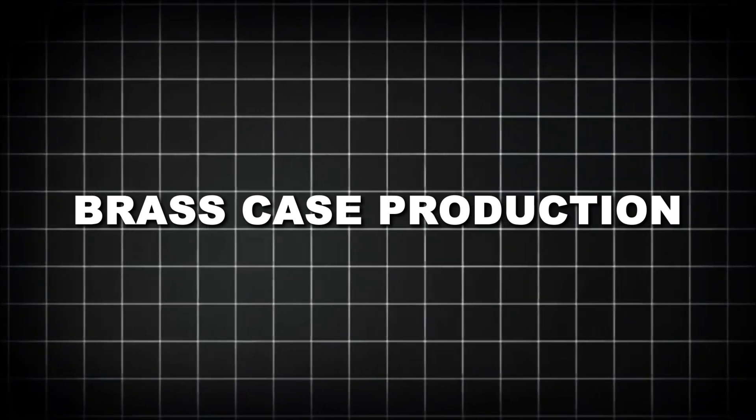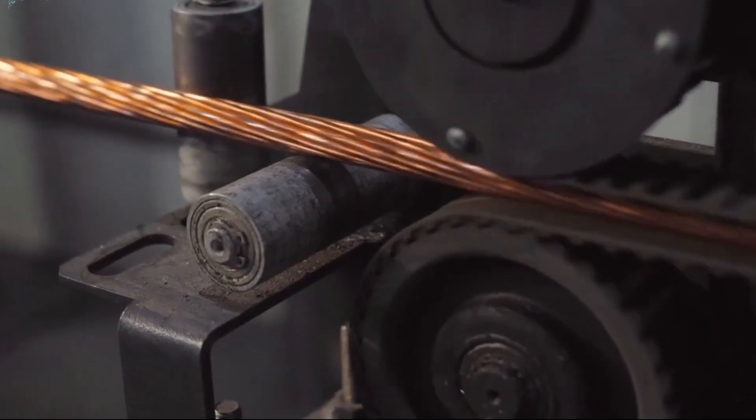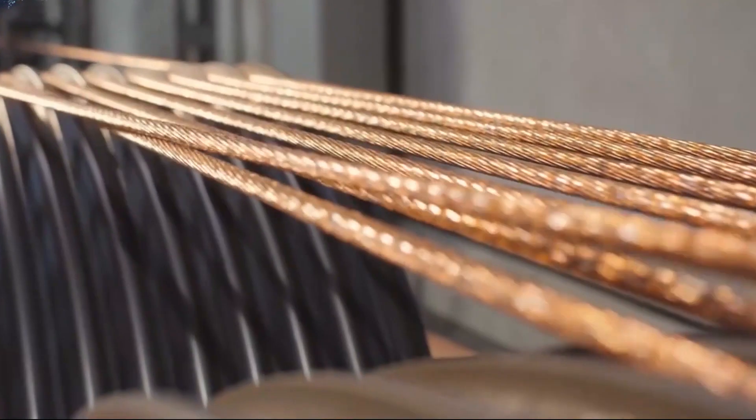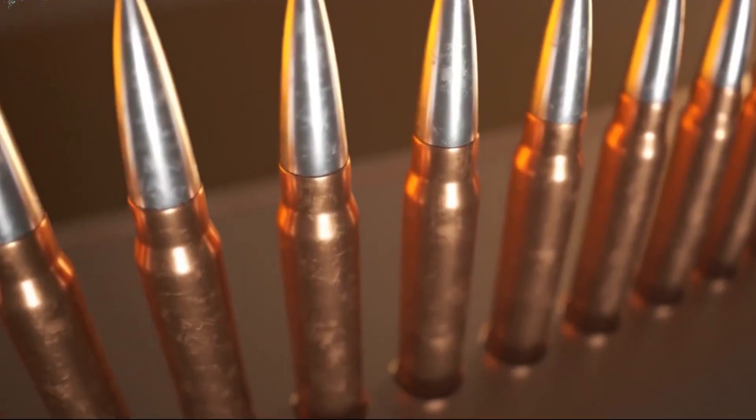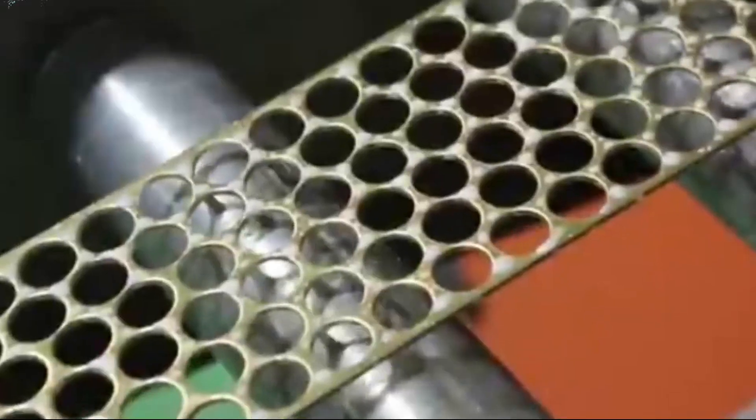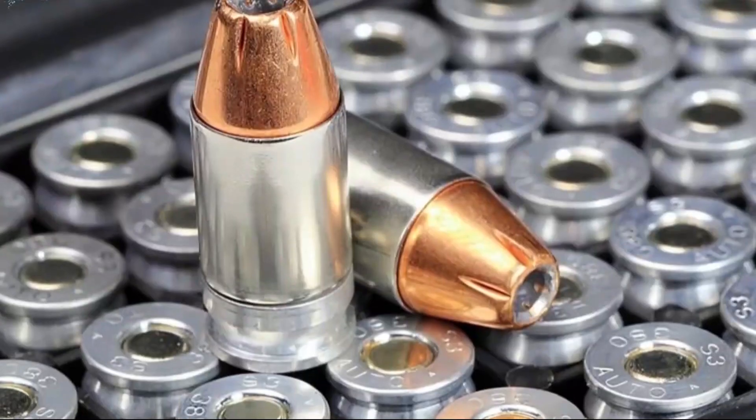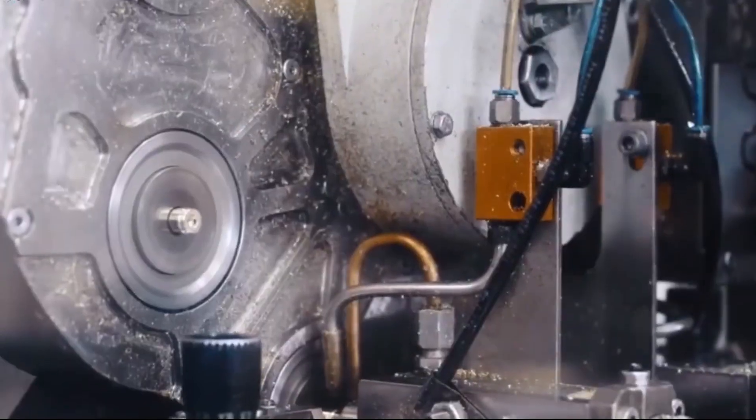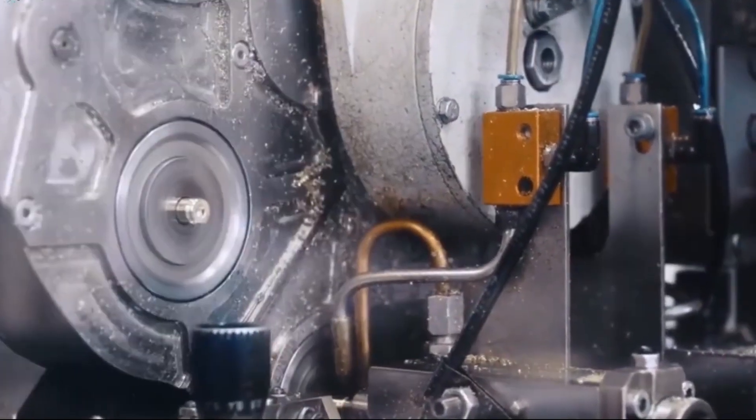The journey of a bullet begins with the brass case, and this process starts with huge spools of brass strips or pre-formed cups. In modern factories, these strips feed into progressive stamping machines that perform multiple operations in sequence. The first step is cupping, where flat brass is stamped into small cup-shaped forms.